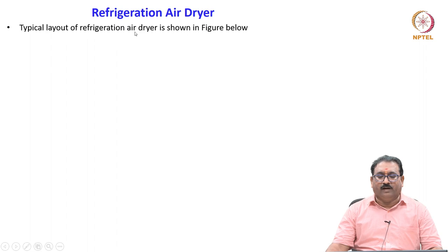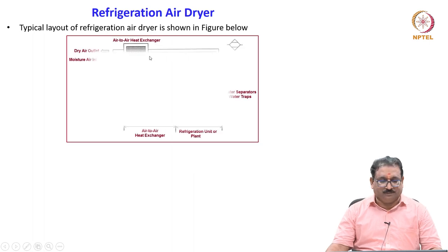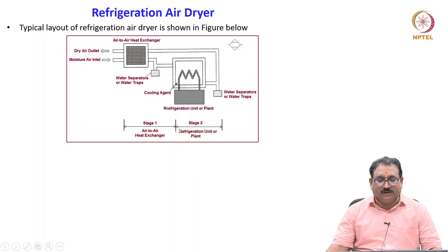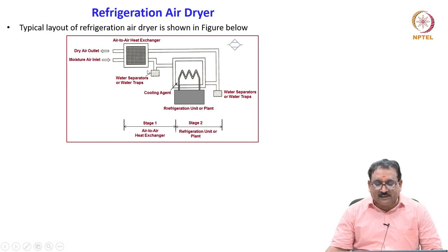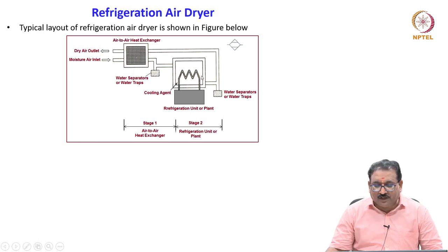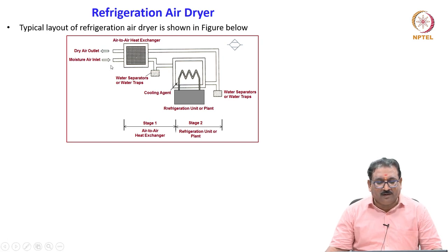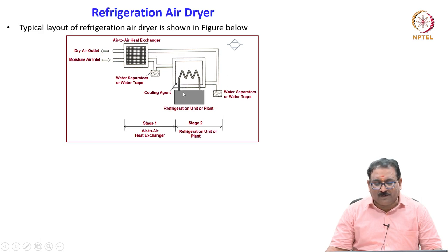The typical layout of a refrigeration air dryer is shown in the figure below. The figure shows the refrigerated air dryer, which basically consists of an air-to-air heat exchanger and one more is a refrigeration unit, also called a refrigeration plant. The moist air will enter the air-to-air heat exchanger, then it will pass on to the refrigeration unit. During each stage, moisture will be removed from the compressed air.